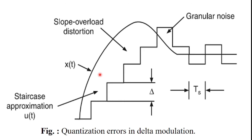As can be observed from this figure, the rate of rise of the input signal x(t) is so high that the staircase signal cannot approximate it. The step size delta becomes too small. When the message signal value is very high and the step size value is very small, there is a large error between the staircase approximated signal and the original input signal x(t). This type of error is called slope overload distortion.